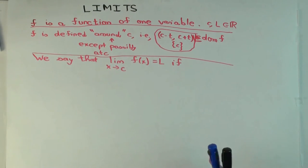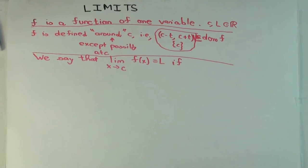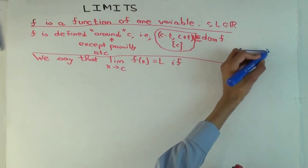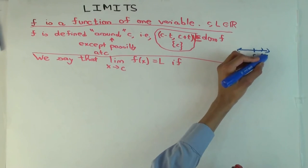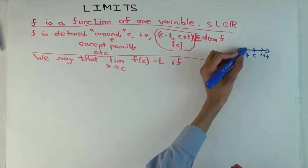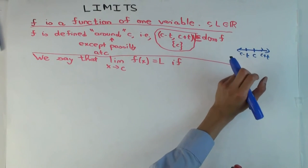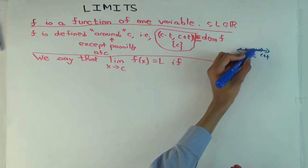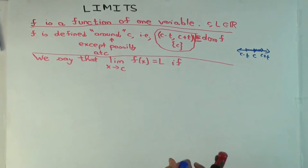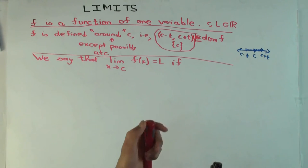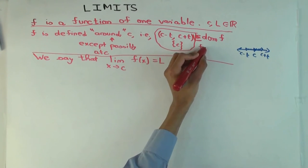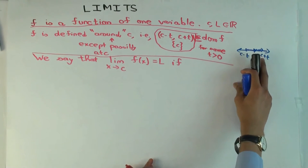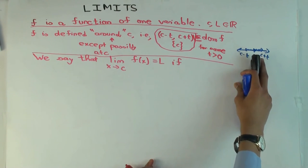Let's make a picture here. You have c, this is c plus t, c minus t. What this is saying is there's some t, probably small enough, so that the function is defined in here and here, and maybe it's not defined at the point c. So this set is for some t greater than zero. The function is defined on the immediate left of c and on the immediate right of c.